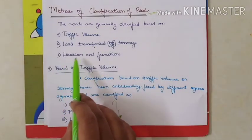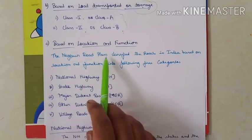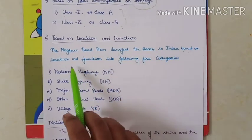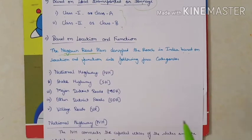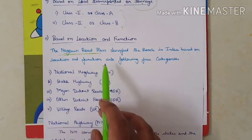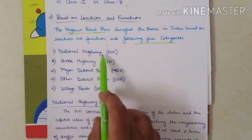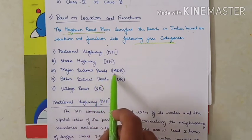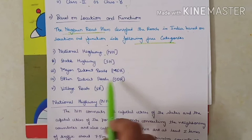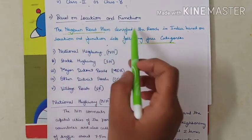The third classification is based on location and function. The Nagpur Road Plan classified routes in India based on location and function into five categories: National Highway (NH), State Highway (SH), Major District Roads (MDR), Other District Roads (ODR), and Village Roads.